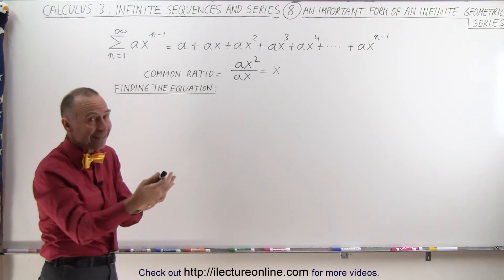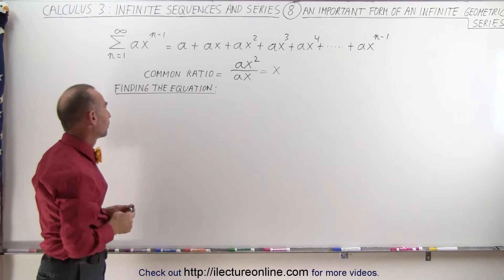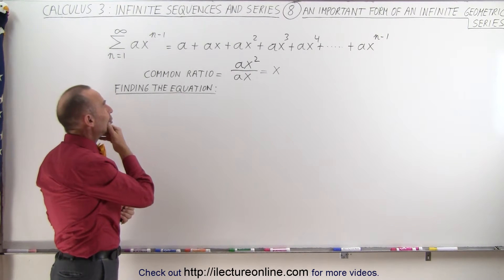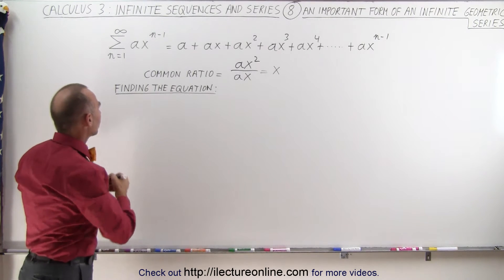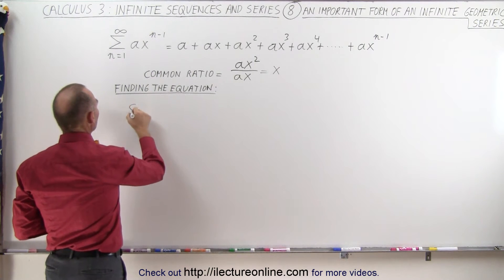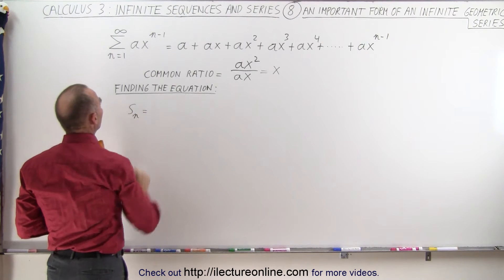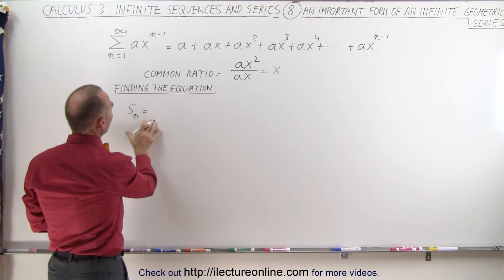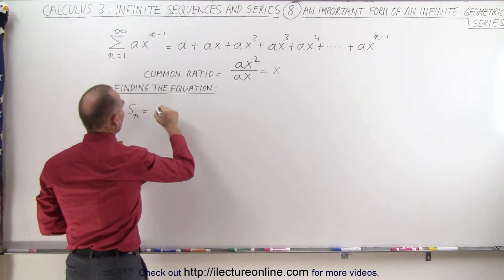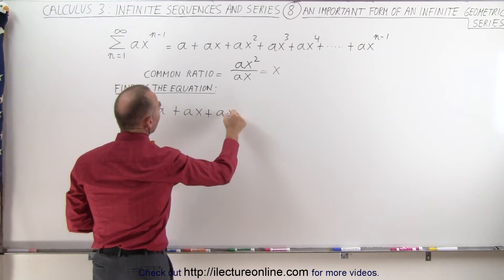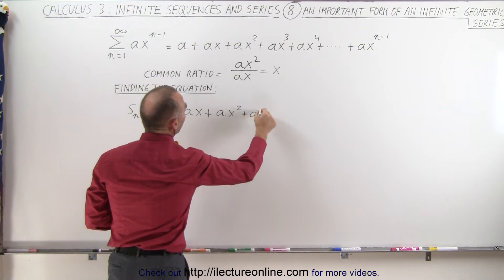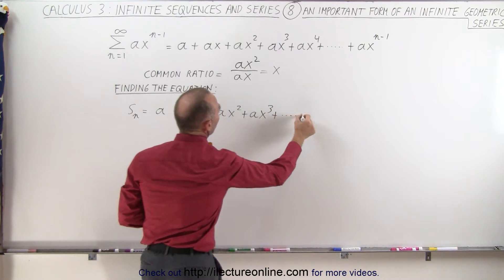Every consecutive term is x times the previous term. Now what we're going to do is find the general form of this equation. To do that, we start out by saying the series sub n is equal to, so we're just going to take the series as is.